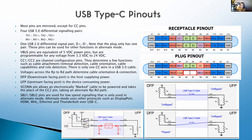In USB 3.0, the host supplying the power defines itself as the downstream facing port (DFP) and the peripheral is the upstream facing port (UFP), which consumes the power. Who does what is negotiated over the cable. So even if you plug a computer into another computer with USB 3.0, they both figure out what they want to be and you won't get a short. The Vbus pins are programmable — they can supply anything from 3.3V DC up to 24V DC depending on what the DFP and UFP negotiate.